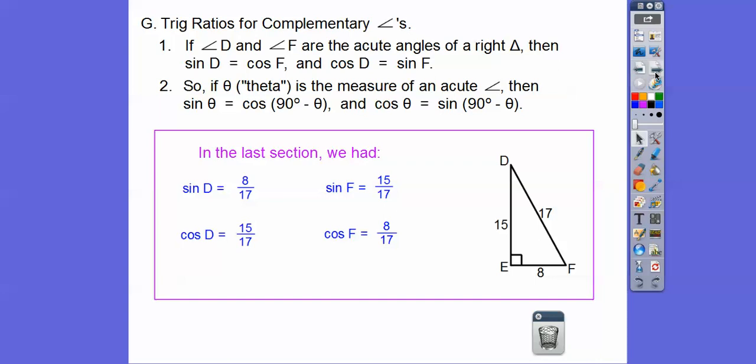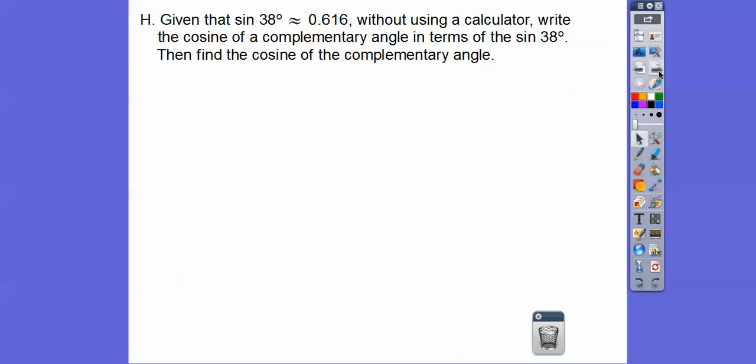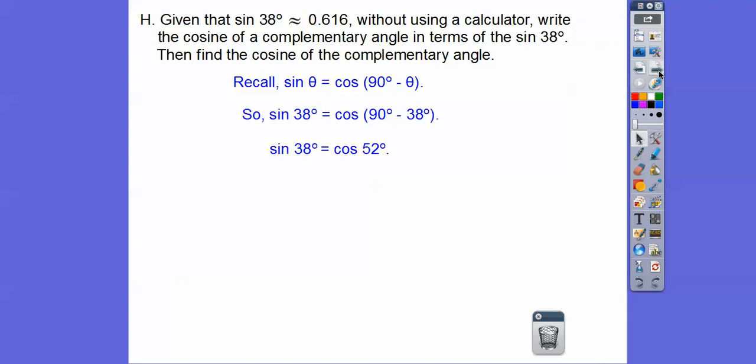If theta is the measure of an acute angle, then the sine of theta equals the cosine of its complement, which is 90 minus theta. And the cosine of that angle equals the sine of its complement. Given that the sine of 38 is about .616, without using a calculator: sine of 38 equals cosine of 90 minus 38, which is cosine of 52. Since sine of 38 is .616, so is cosine of 52.